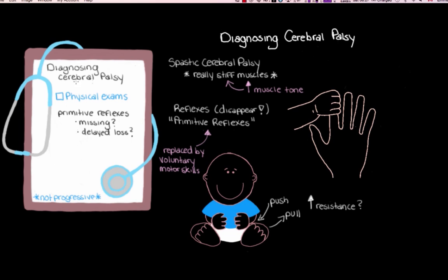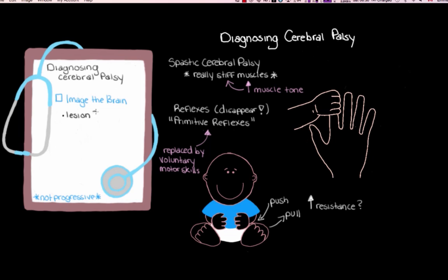At this point, we're considering cerebral palsy as the possible diagnosis. Our next step is to look at the child's brain using an MRI or ultrasound to see if we can find a lesion — a bit of damage consistent with cerebral palsy. Finding a lesion can help confirm the diagnosis, and it may also help us understand exactly what went wrong during the causative event, how severe the damage is, and what sort of long-term consequences the child might face.